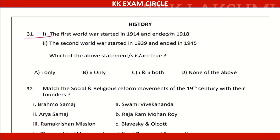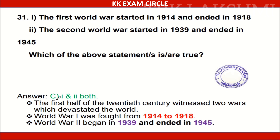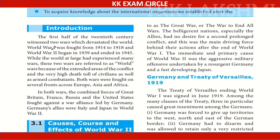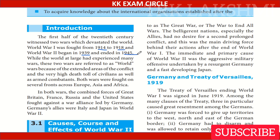Question 1. The First World War was started in 1914 and ended in 1918. The Second World War started in 1939 and ended in 1945. Which of the above statements is true? Option C: Both 1 and 2 are correct. World War I was fought from 1914 to 1918 and World War II began in 1939 and ended in 1945.